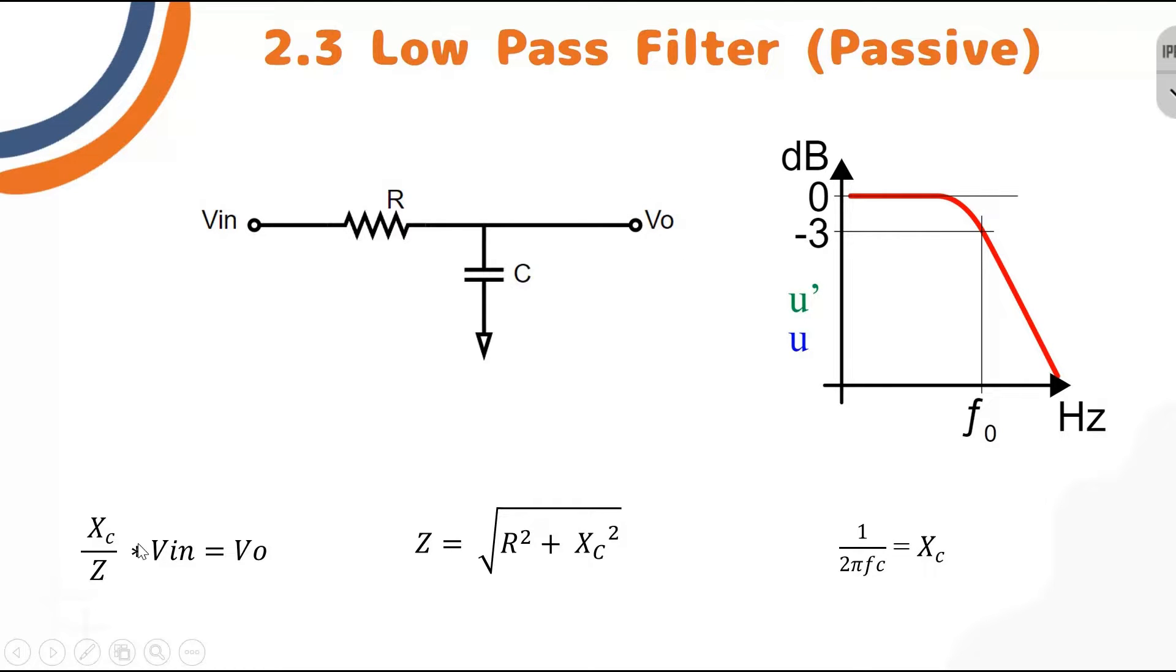To find the value of V out we can apply this formula: V out = (Xc/Z) × V in. Z = √(R² + Xc²).